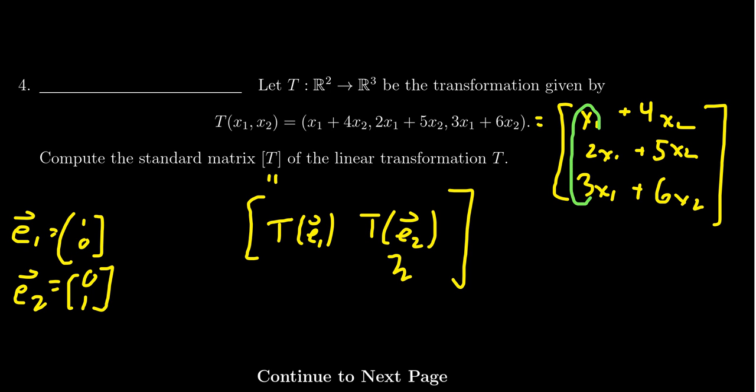So we see the coefficients from the first column are going to be 1, 2, 3. And for the second column, you're going to see 4, 5, 6. I see what I did there now. And so that's what we're going to record here on the line. The first column is 1, 2, 3, and then the second column is 4, 5, 6. And that is then the standard matrix representation of this linear transformation.